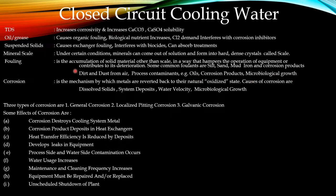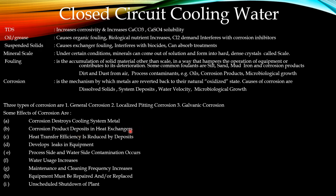Fouling also forms in pipelines and heat exchangers. Corrosion is normally due to TDS — it is the mechanism by which metals are reversed back to their natural oxidized state. Causes of corrosion include dissolved solids, system deposits, water velocity, and microbiological growth in the cooling water, all of which increase the corrosion rate. There are three types of corrosion: general corrosion, localized pitting corrosion, and galvanic corrosion. Corrosion will destroy the cooling water system metal and affect the metal surface of the cooling water pipeline. Corrosion product deposits on the heat exchanger tube side reduce heat transfer efficiency.